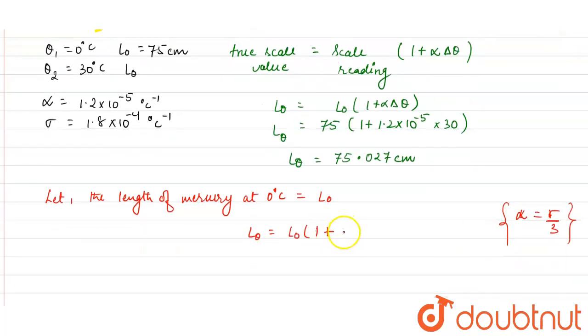So using this relation, what we can say is sigma upon 3 to delta theta.